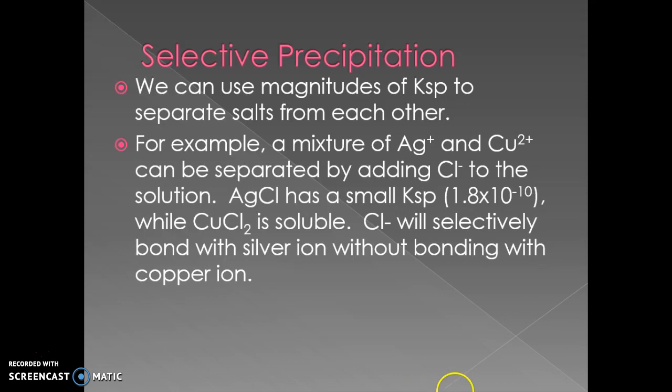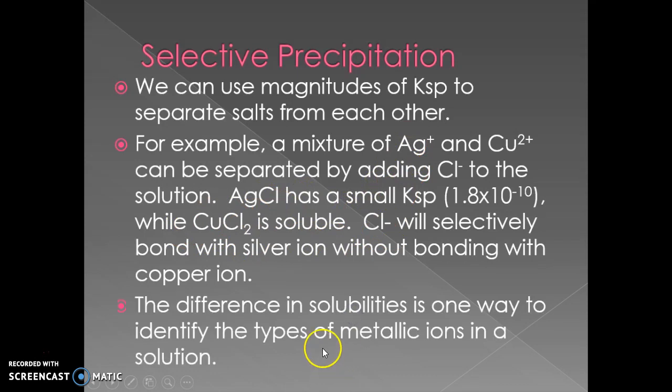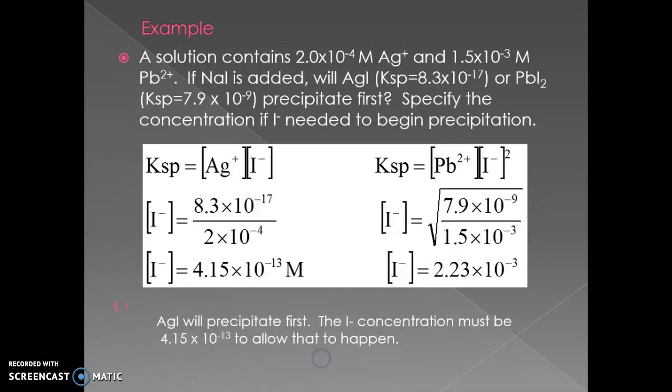You essentially get selective precipitation. The chloride is going to bond with the silver ions without bonding with the copper ions. You can separate silver chloride from copper ions. It's the difference in solubilities that's one way to identify the ions.